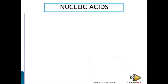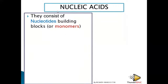Let's look at nucleic acids, because DNA is an example of a nucleic acid. Nucleic acids are the acids found in the nucleus. They consist of nucleotides — these are their building blocks or monomers. In the exam, they can ask: what is the smallest unit of a nucleic acid? The answer is a nucleotide. What are the monomers of DNA? Nucleotides.